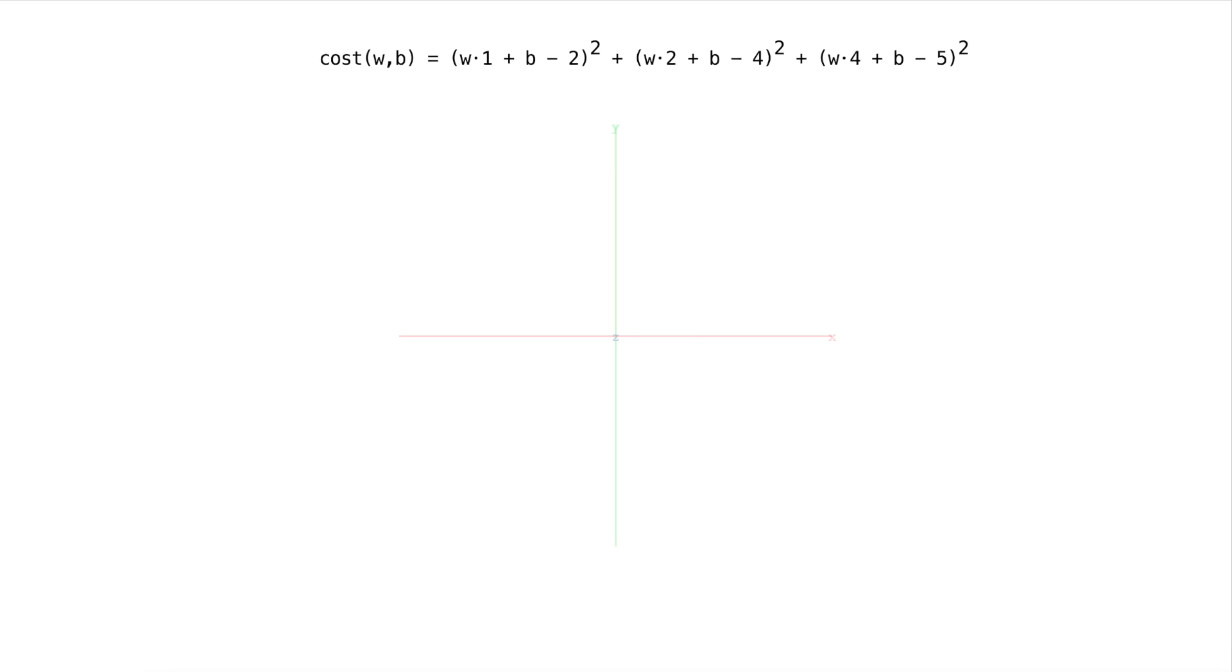Now to visualize this we can't just do a normal graph like an x and y graph because with the x and y graph, the function has to take in one input and put out one output. So we need another dimension of our coordinate system. So let's introduce that. And this is what I've been working on all this previous time. So a 3D coordinate system. Now we have this extra dimension z.